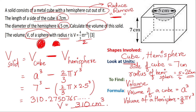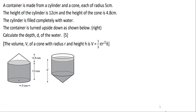Moving on to the next question. A container is made from a cylinder and a cone, each of radius 5 centimeters. The height of the cylinder is 12 centimeters and the height of the cone is 4.8 centimeters. The cylinder is filled completely with water. The container is turned upside down as shown. Calculate the depth d of the water. The volume of a cone with radius r and height h is given to you. Here you have a cone and a cylinder involved.